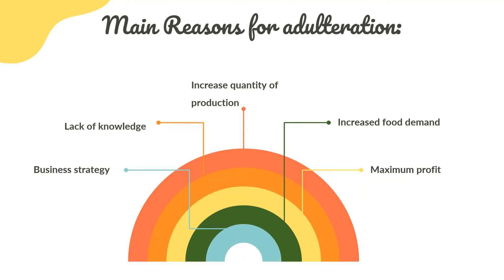The main reasons for adulteration are business strategy, lack of knowledge, increased quantity of production, increased food demand, and the desire to maintain profit. People want to make profit and that is why they use adulteration, without knowing that it could be harmful for human health.